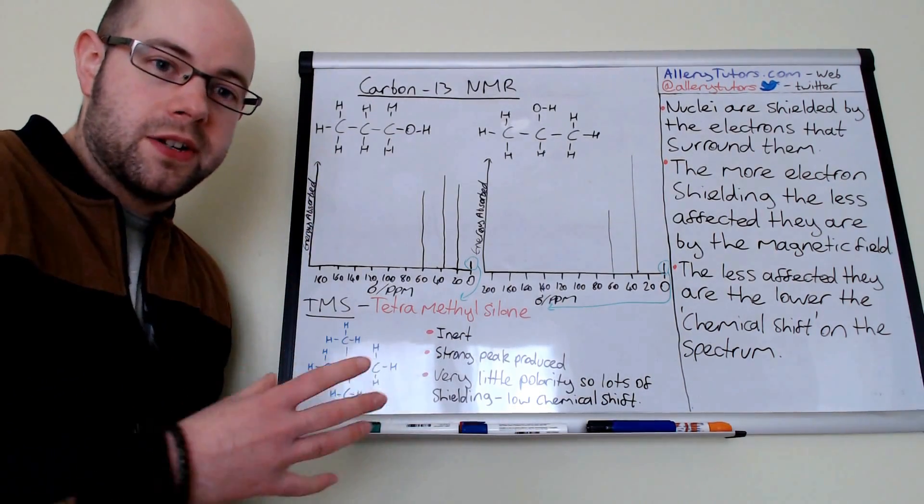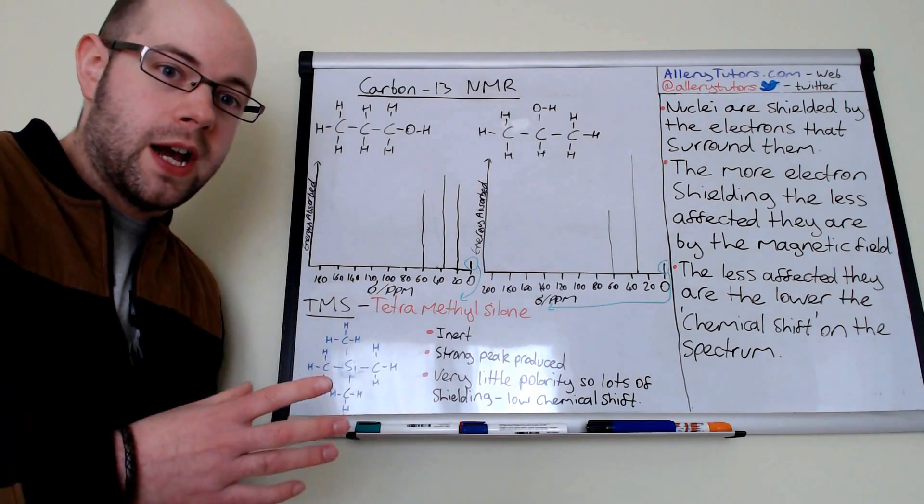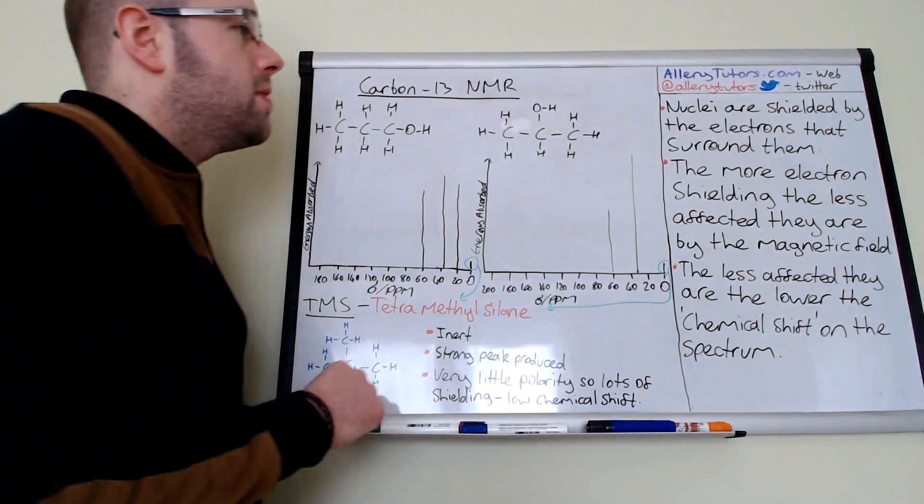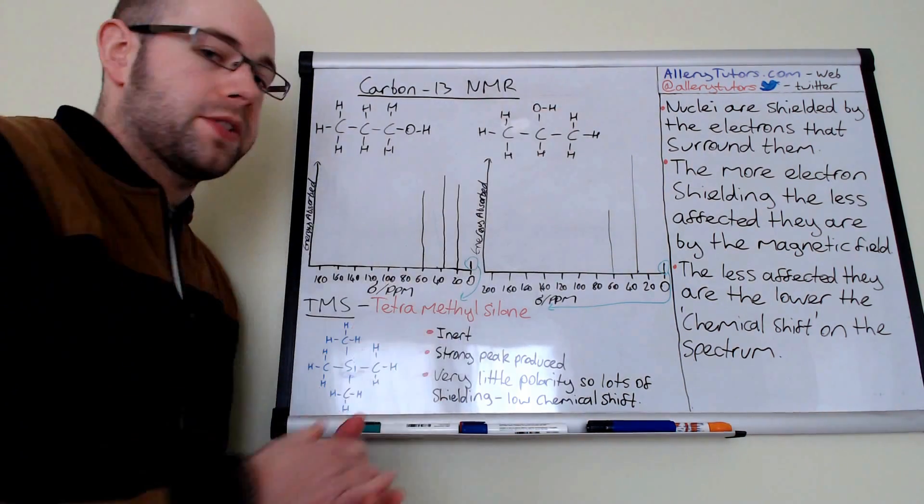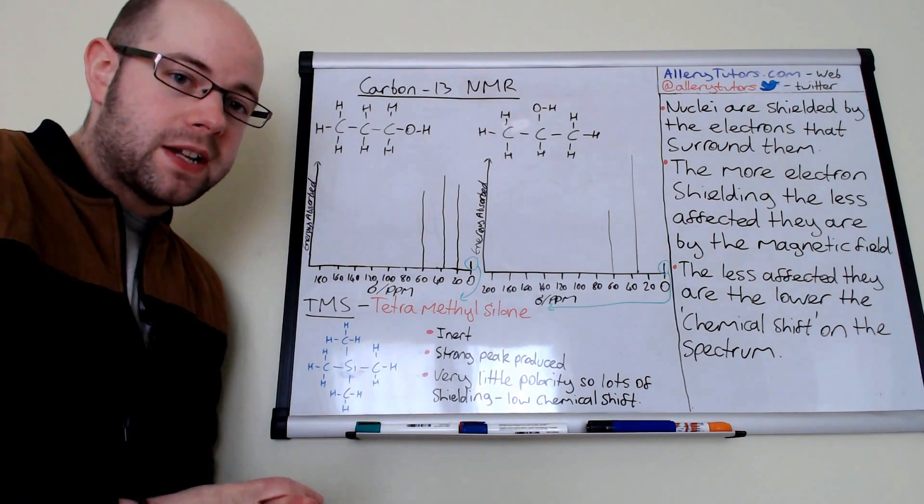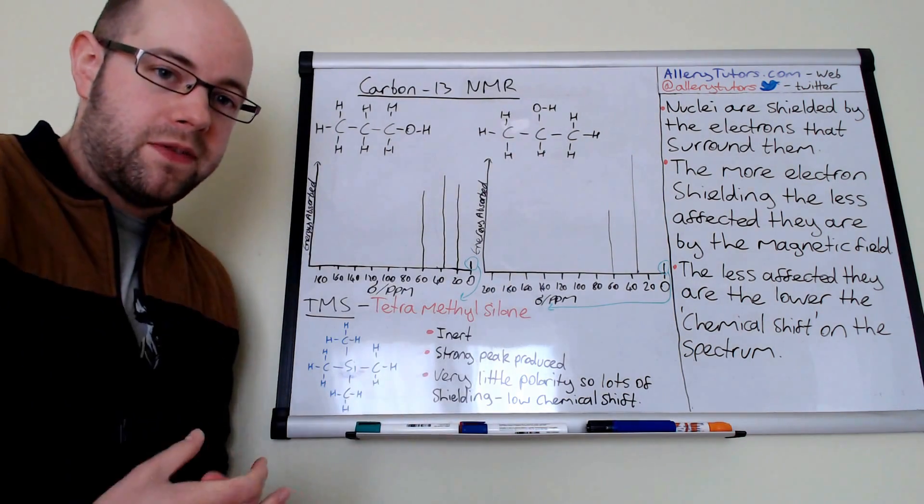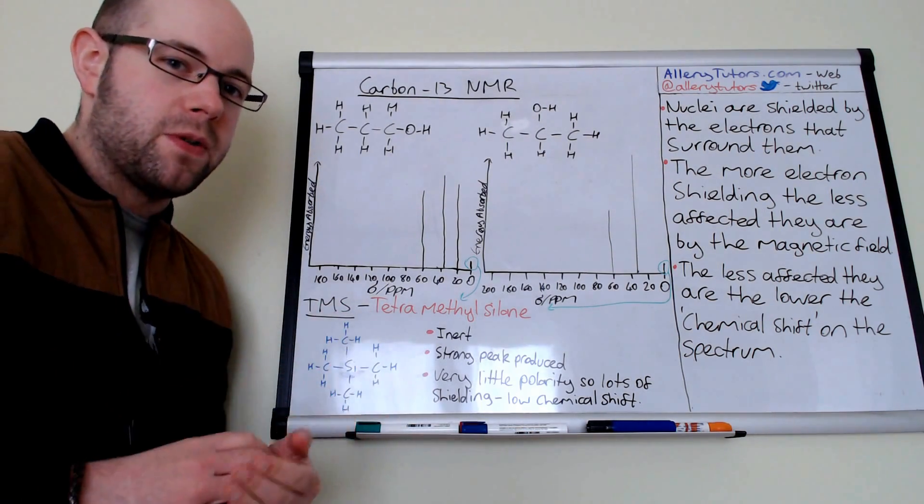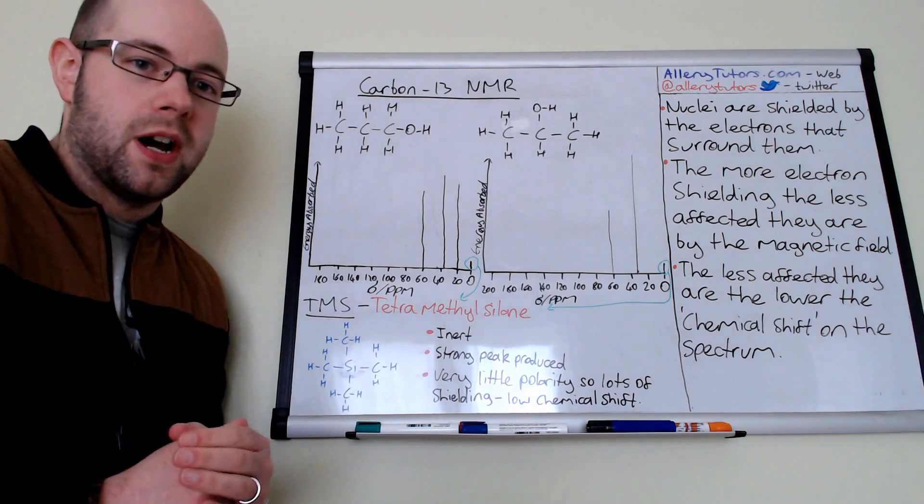So first of all we're going to look at the title, which is carbon-13. We have atoms which have an odd number of nuclei and this means that the NMR machine can actually detect them. So these nuclei are effectively shielded by electrons that surround them and obviously this is what these carbon atoms will have. And effectively the more electron shielding we have, then the less affected they are by the magnetic fields. This can either be the magnetic field in the NMR machine or magnetic fields by neighbouring atoms as well. What we're going to mainly focus on is the effect that neighbouring atoms have on the shielding of these carbon atoms.